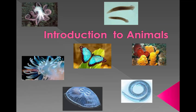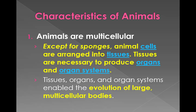Today we begin our discussion of animals, starting by listing some characteristics. First, they're multicellular. The only animals that don't have cells arranged into tissues that produce organs and organ systems are sponges. The evolution of large multicellular bodies came about because tissues are organized into organs and the organs into organ systems.